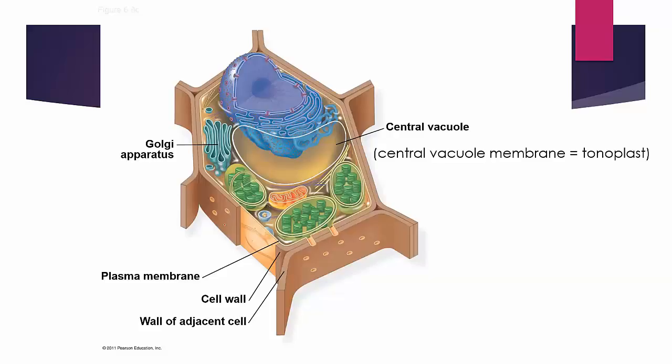Now in the middle of the cell here we see the central vacuole. The central vacuole has a membrane known as the tonoplast. That membrane is also composed of a phospholipid bilayer with proteins embedded within it.